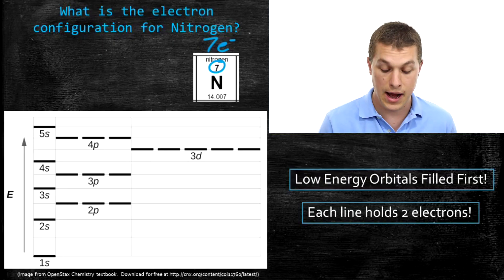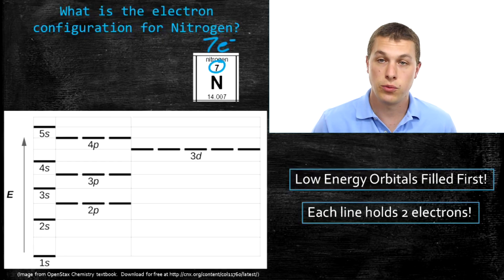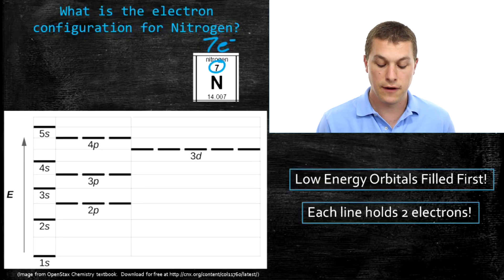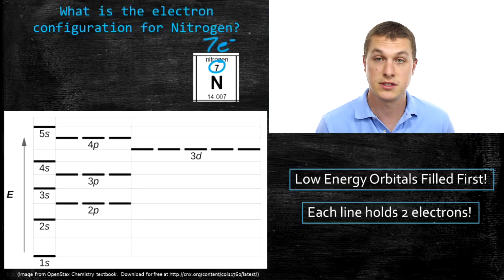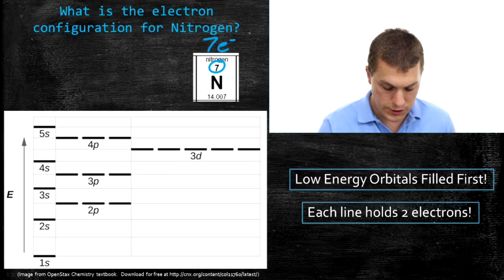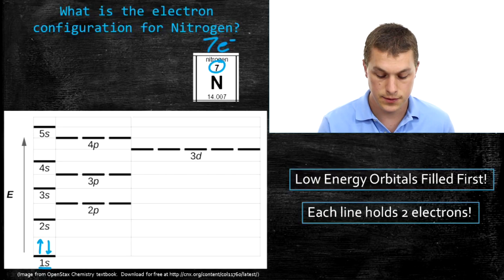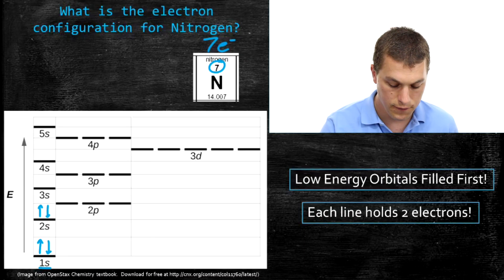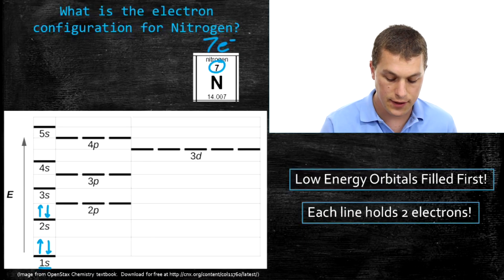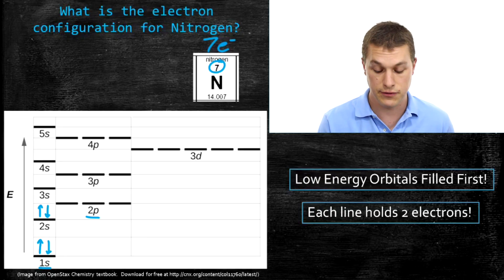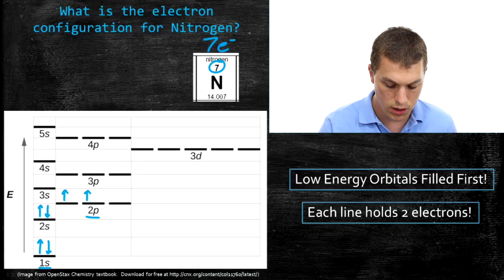We're going to represent electrons with arrows — an up arrow represents an electron, and a down arrow represents an electron. Each line on this chart holds 2 electrons: 1 spin up and 1 spin down. We start at the lowest energy and fill those lines with 2 electrons each until we've filled all 7 electrons into our orbitals. The very first place we fill is the 1s, because it's the lowest energy. We always fill with up electrons before down electrons, so now that's full — 2 electrons. Then we fill the 2s with 2 more electrons.